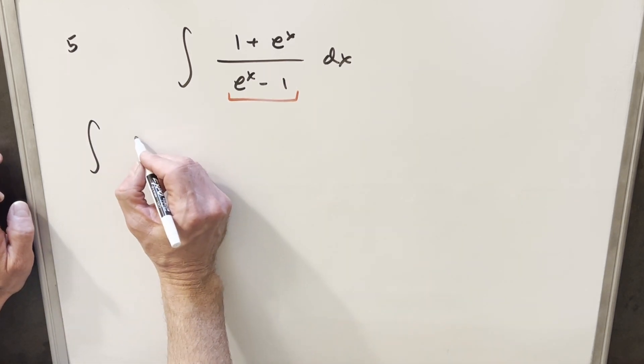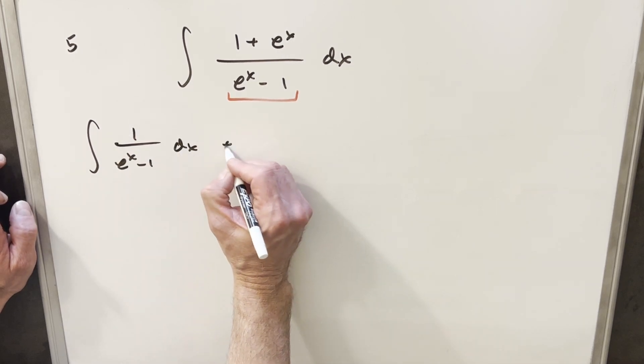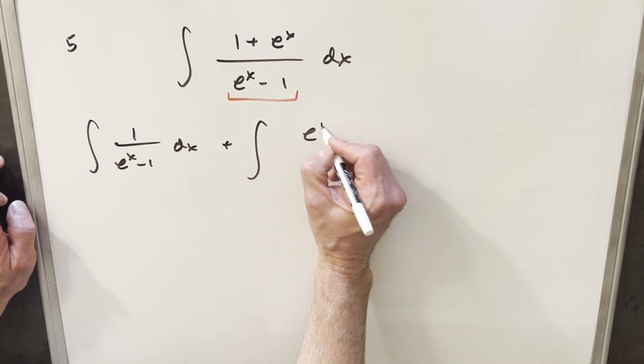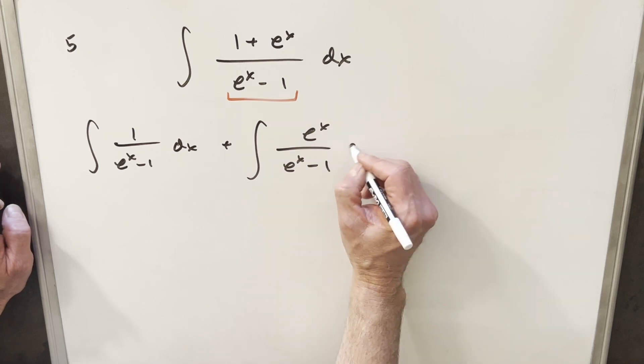I think it's a little easier that way. So for our first one, we're just going to have the 1 over e to the x minus 1, and then for the second one, the second one is going to be set up the way we want it because we already have our u substitution set up.